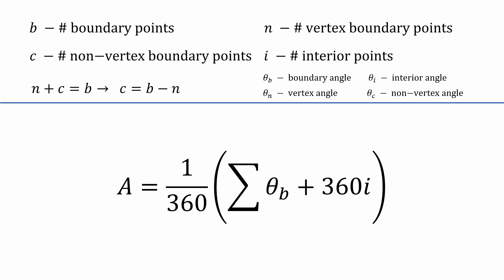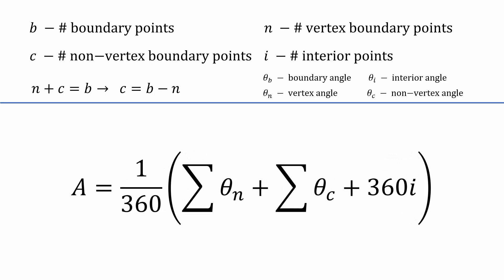Now, since all the vertex angles and non-vertex angles add up to the total boundary angles, we can replace the first sum with the sum of the vertex angles plus the sum of the non-vertex angles. The first sum is just equal to n minus 2 times 180 since that's equal to the total degrees in a polygon based off of the number of vertex angles, n.